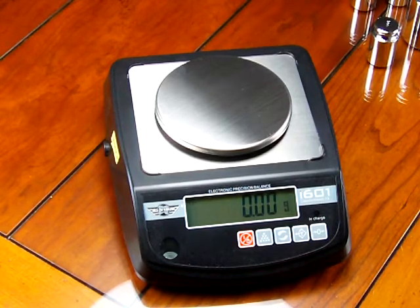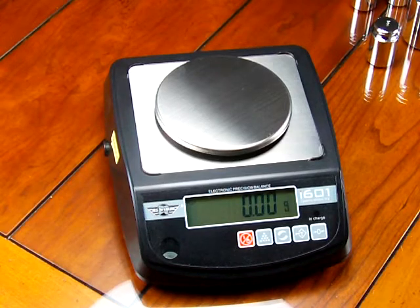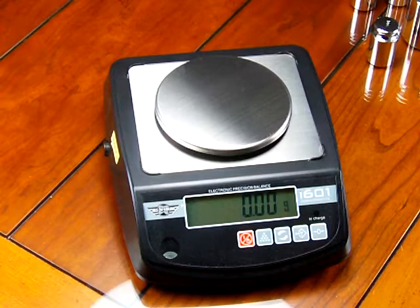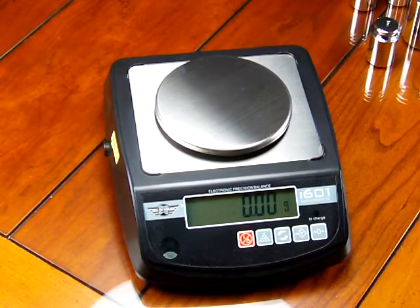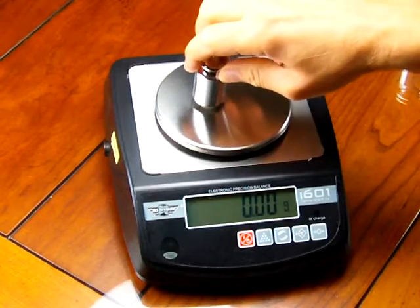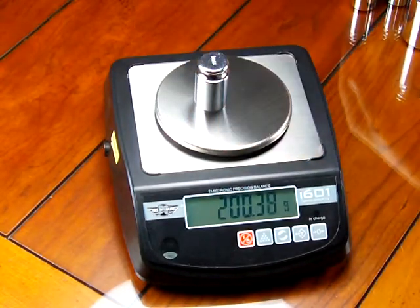So the i601 offers 600 grams by .01 gram readability, so it's a two decimal place balance and you'll notice when we put these calibration weights on.